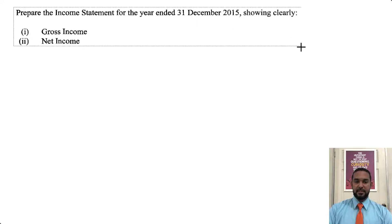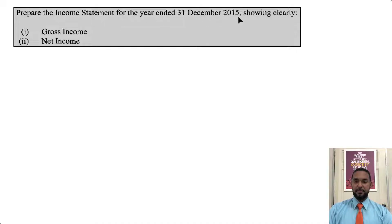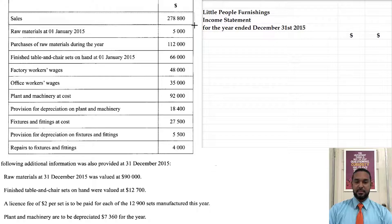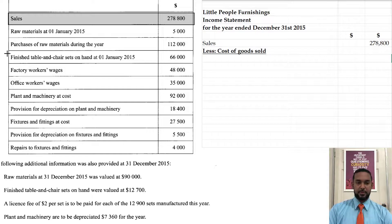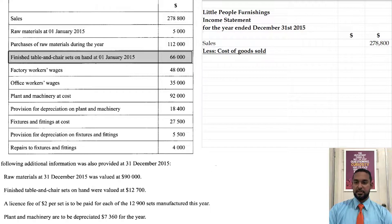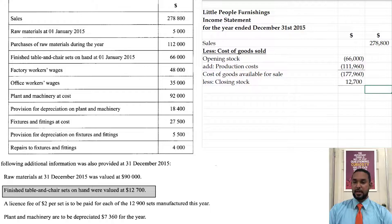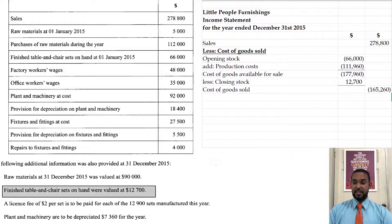Part B is asking us to prepare the income statement for the year ended 31st December 2015, showing clearly gross income and net income. We start off with sales of $278,800. Then we have less cost of goods sold: opening stock of finished goods of $66,000, plus the cost of production from the manufacturing account, giving us cost of goods available for sale. Subtract the closing stock of $12,700, giving us cost of goods sold of $165,260. Subtract that from sales to get gross income of $113,540.